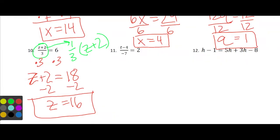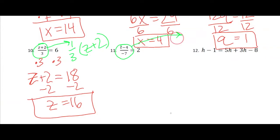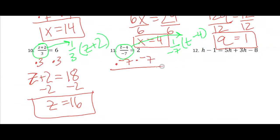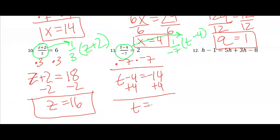We'll treat number 11 the same way. You don't really need to write it out like that, but I want to point it out if anyone's confused about how to handle that. We're going to multiply both sides by negative 7, and that gives me t minus 4 equals negative 14. I'm going to add 4 to both sides, and I get t equals negative 10.